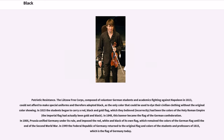The Lützow Free Corps, composed of volunteer German students and academics fighting against Napoleon in 1813, could not afford to make special uniforms and therefore adopted black as the only color that could be used to dye their civilian clothing without the original color showing. In 1815 the students began to carry a red, black and gold flag. In 1848, this banner became the flag of the German Confederation. Prussia unified Germany under its rule and imposed the red, white and black of its own flag, which remained the colors of the German flag until the end of the Second World War. In 1949, the Federal Republic of Germany returned to the original flag and colors of the students and professors of 1815, which is the flag of Germany today.